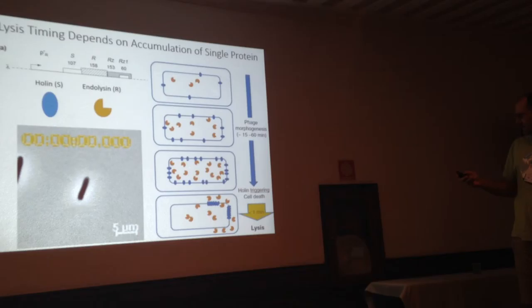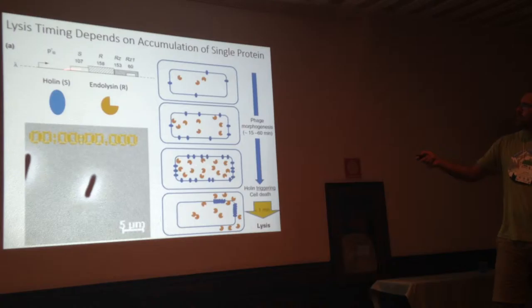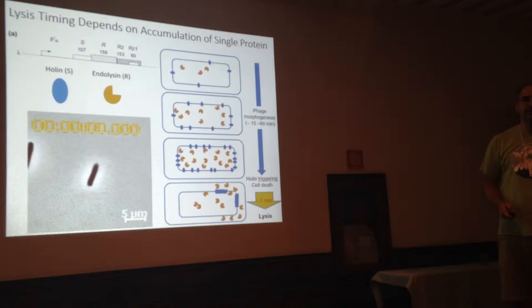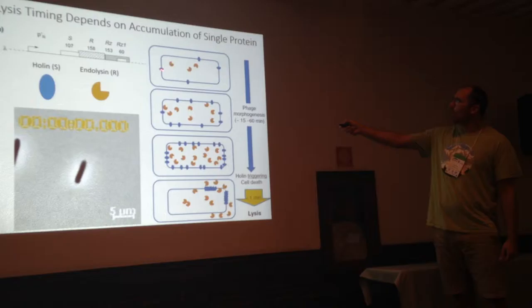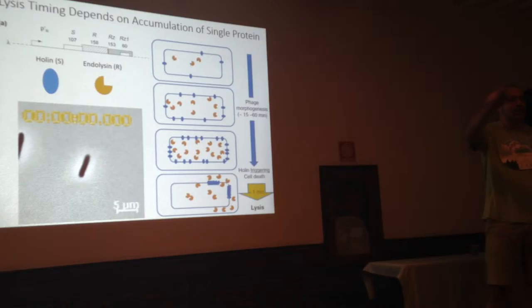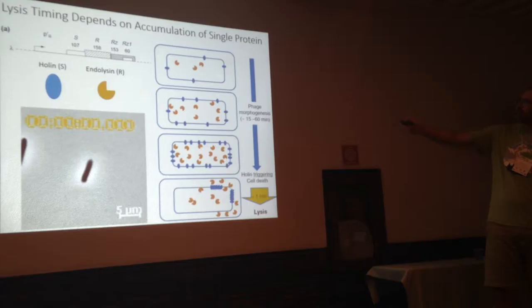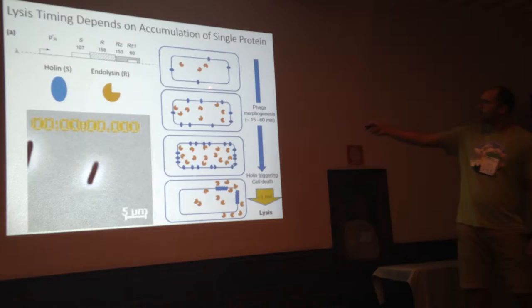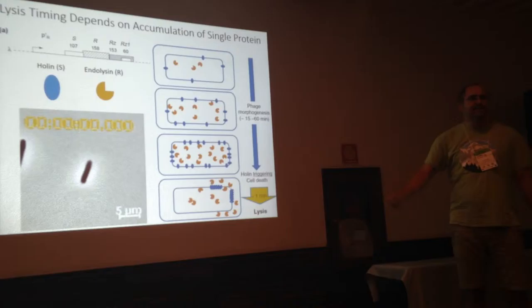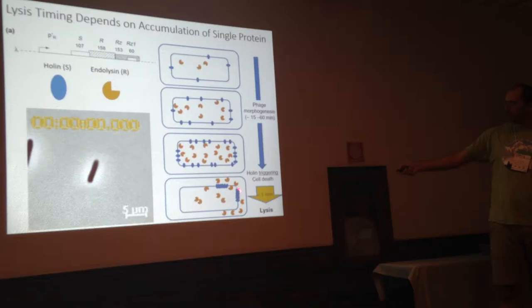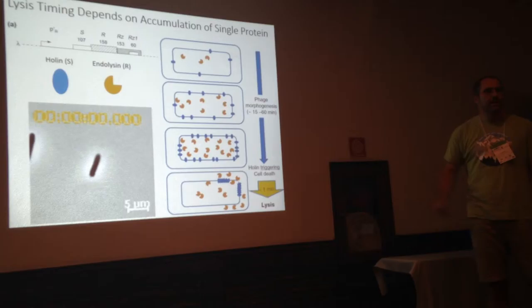I use bacteriophage lambda. There are essentially two important proteins produced enabling these bacteriophage to lyse cells. They're called holin and endolysin. The holin accumulates in the inner membrane of bacteria. Outside of that we have a layer of peptidoglycan and then we also have an outer membrane. The endolysin is going to accumulate in the cytoplasm. Over time, with protein accumulation, the holin will reach a critical concentration in the inner membrane where it nucleates to form a hole, through which the endolysin can be released to digest the peptidoglycan, causing the cell to lyse.